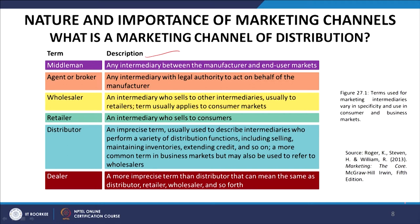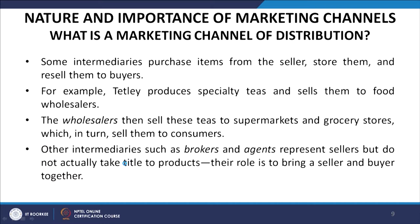The middleman is any intermediary between the manufacturer and the end-user markets. Agents and brokers are intermediaries with legal authority to act on behalf of a manufacturer. A wholesaler is an intermediary who supplies to other intermediaries, usually retailers — a term applied to consumer markets. A retailer is any intermediary who sells to the consumer. A distributor is a term used for intermediaries performing a variety of distribution functions including selling, maintaining inventories, and extending credit — more common in business markets and may also refer to wholesalers.